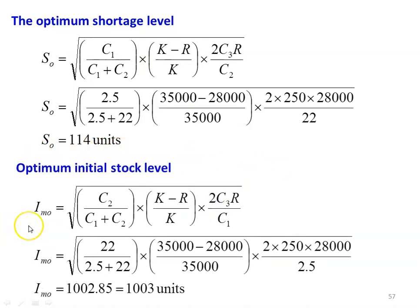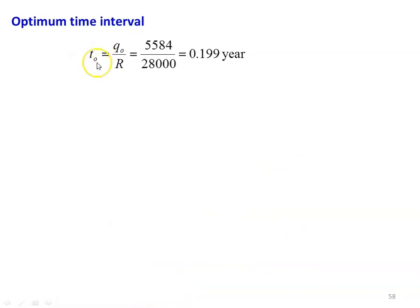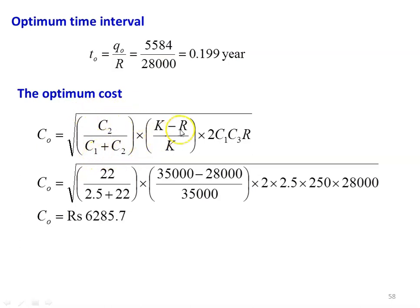Optimum initial stock IMO = √[C2/(C1 + C2) × (K − R)/K × 2C3R/C1]. Substituting: √[22/(2.5 + 22) × (35,000 − 28,000)/35,000 × 2 × 250 × 28,000/2.5]. Calculating IMO = 1,002.85, approximately 1,003 units. Optimum time interval TO = QO/R = 5,584/28,000 = 0.199, approximately 0.2 years. Optimum cost CO = √[C2/(C1 + C2) × (K − R)/K × 2C1C3R]. Substituting: √[22/(2.5 + 22) × (35,000 − 28,000)/35,000 × 2 × 2.5 × 250 × 28,000] = ₹6,285.7. These are all the answers to the problem.